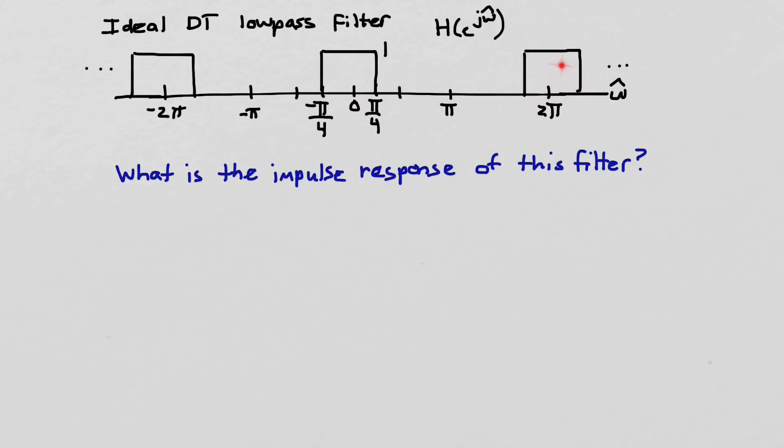So we see a copy at +2π, we see a copy at -2π, and these copies continue forever out to -∞ and +∞.